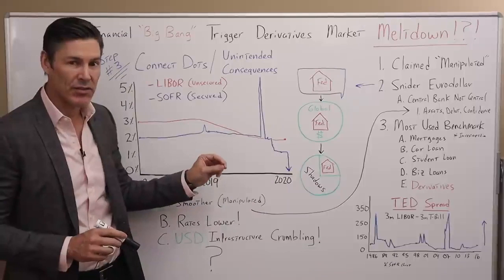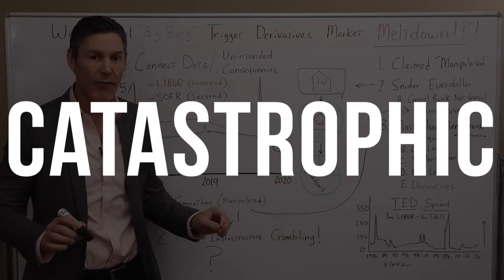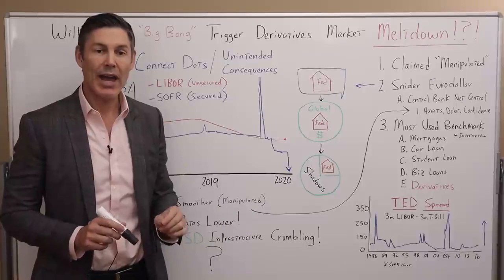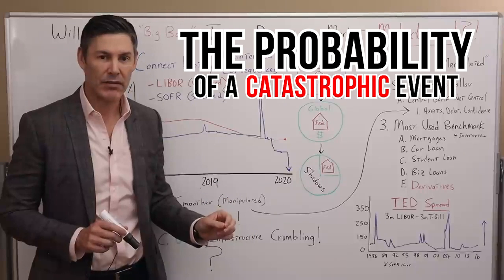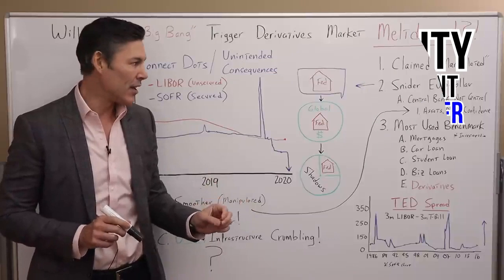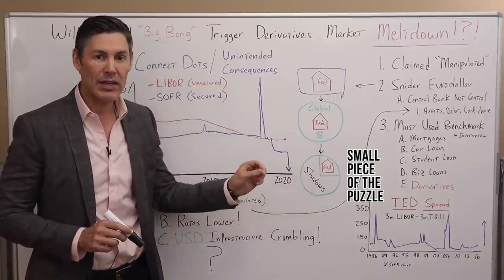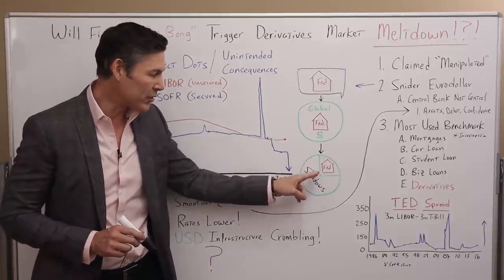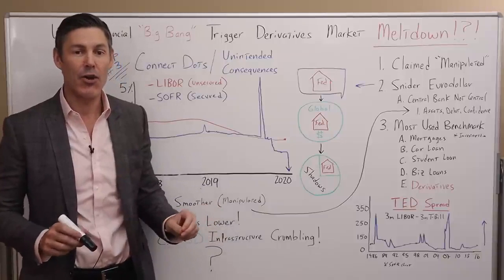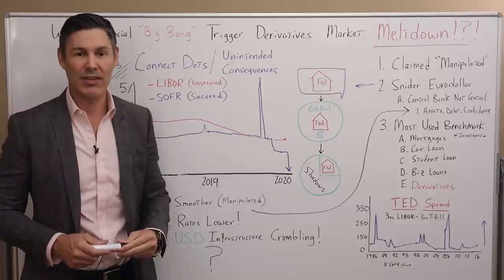Going back to this SOFR chart: if they did lose control moving forward of the repo market, it would be absolutely catastrophic. I'm not saying this is definitely going to happen — there are no certainties, only probabilities. What I am saying is the probability of a catastrophic event moving from LIBOR to SOFR is higher because the market doesn't realize that the Fed or the central bank isn't central to the US dollar monetary system. They're only a small piece of the puzzle. If they only control, let's say, 25% of it, we should be far more worried about the other 75% that doesn't care about the US economy at all — it could spike these rates up to the moon at a moment's notice, just like they did on September 17th, 2019.